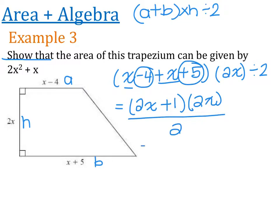So we have 2x times by 2x, which is 4x squared. And then I also have 2x times 1, which is going to give me 2x. And I take all of that and I divide it by 2. So I can do the 4x squared divided by 2, which gives me 2x squared. And I can also do the 2x divided by 2, which leaves me with x.